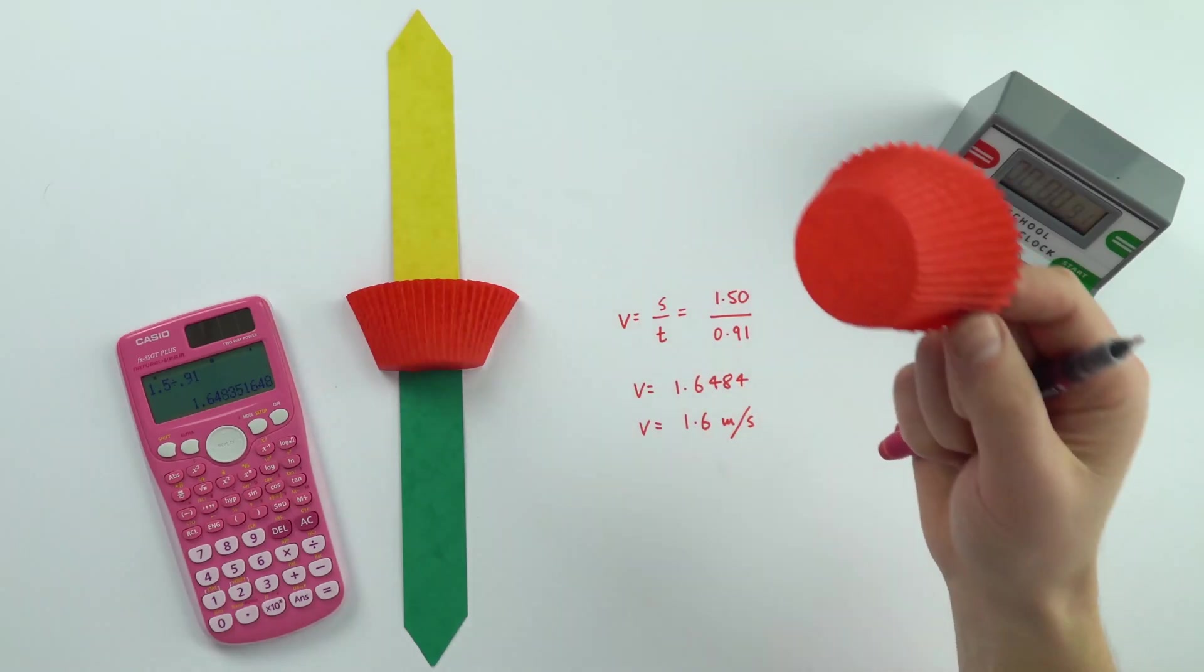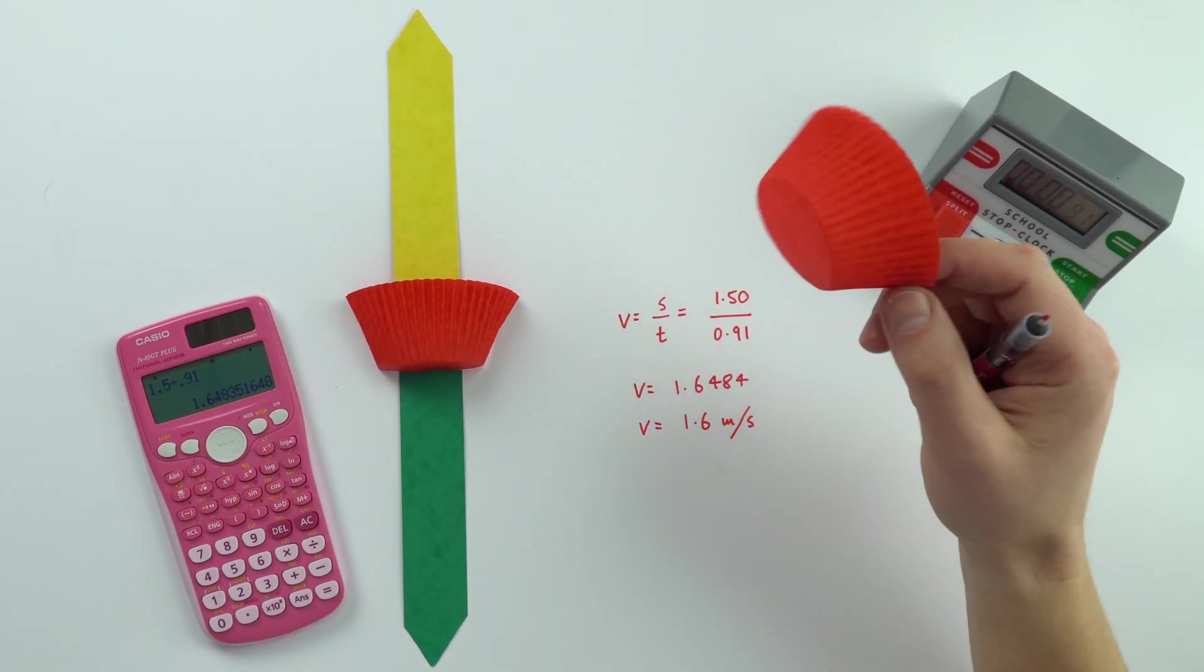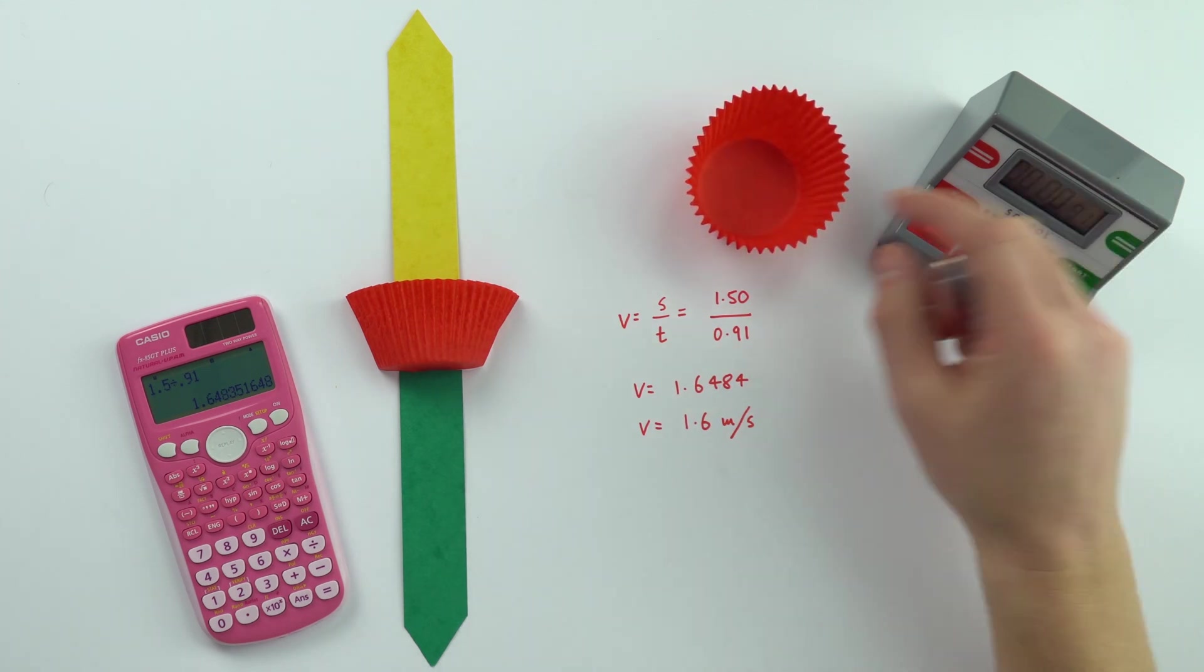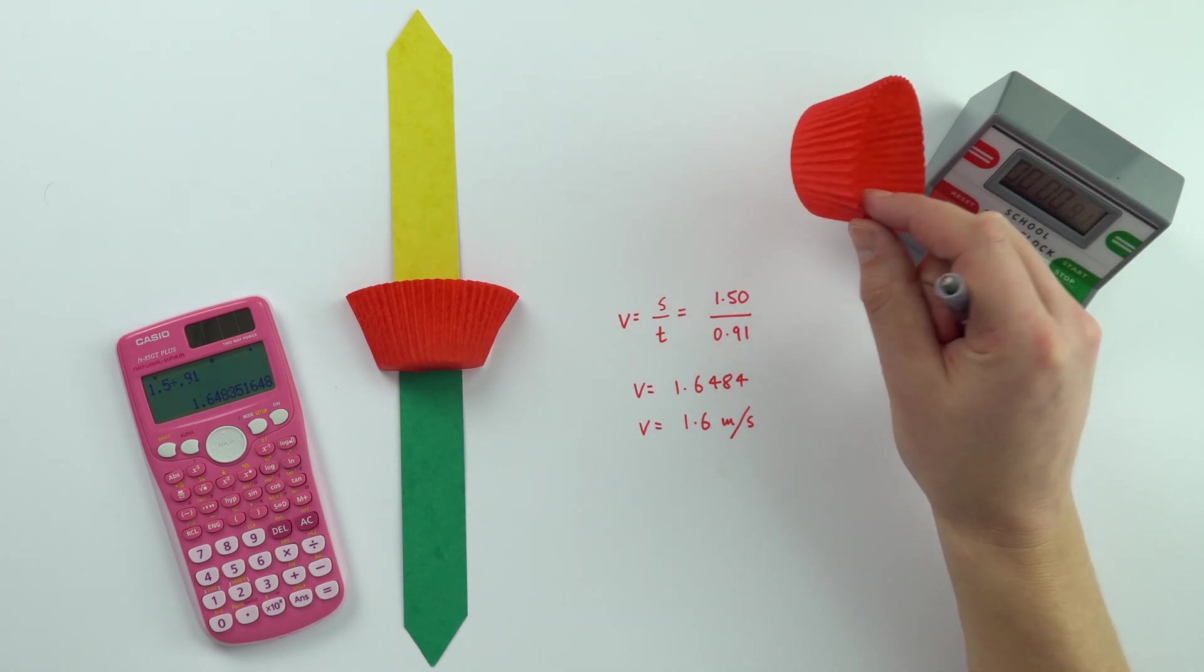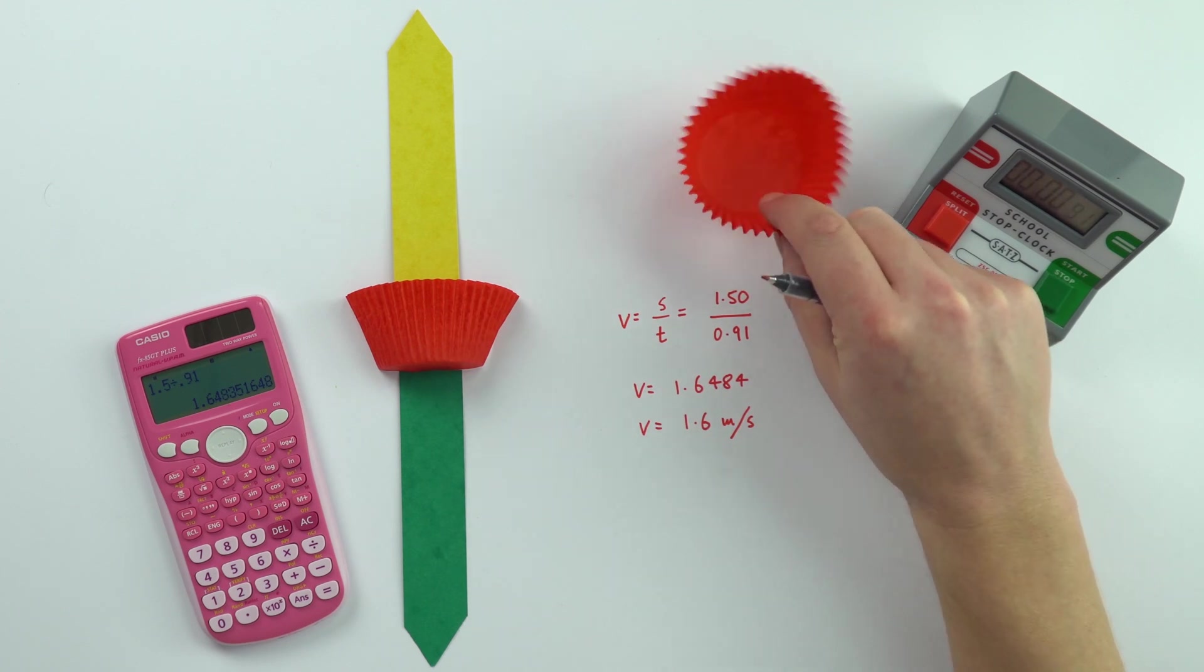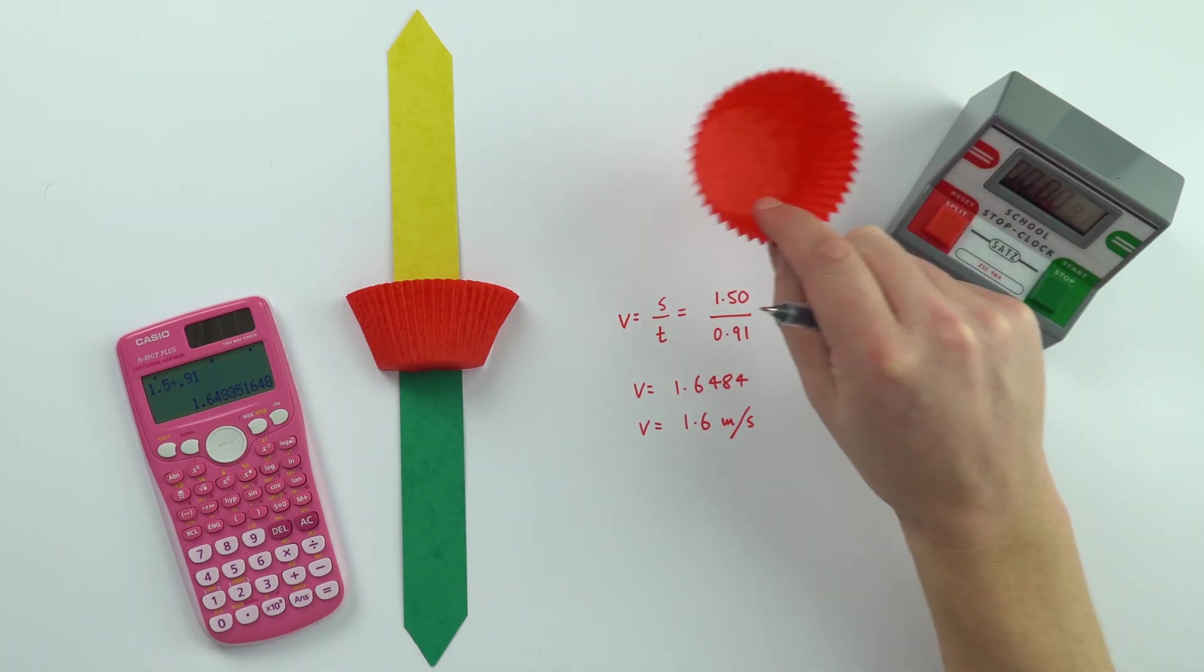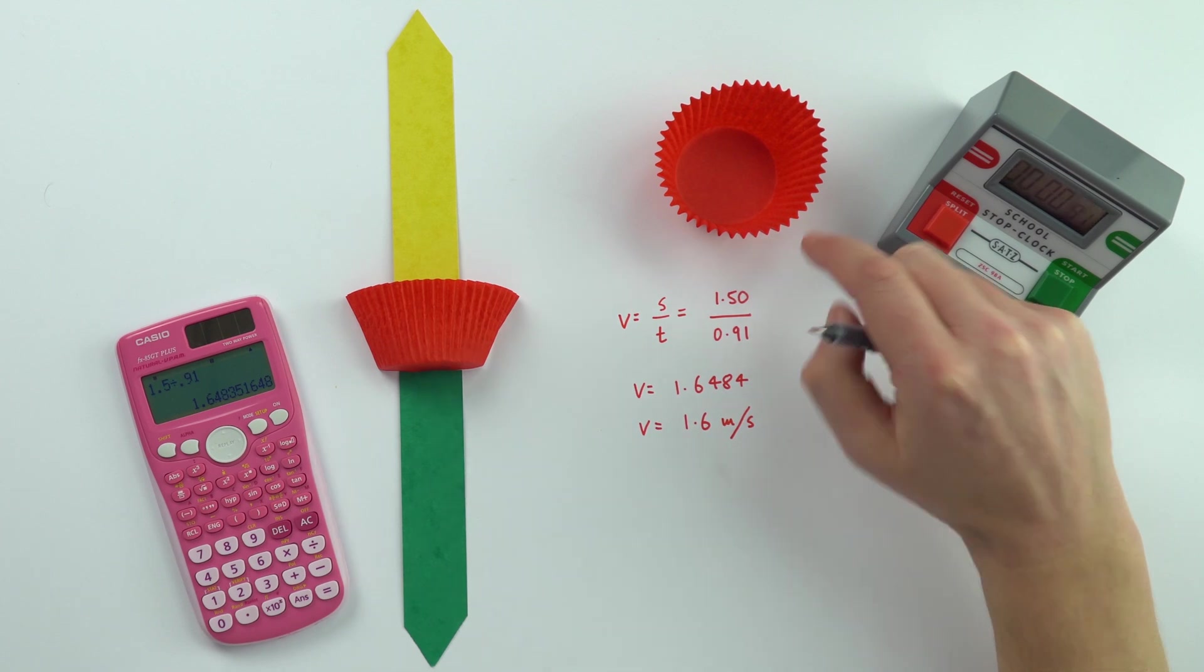I found that with one of these cupcake cases, its terminal velocity was 1.6 meters per second. You could repeat the experiment with different surface areas or even a different number of cupcake cases, so you're increasing the weight while keeping the surface area the same.